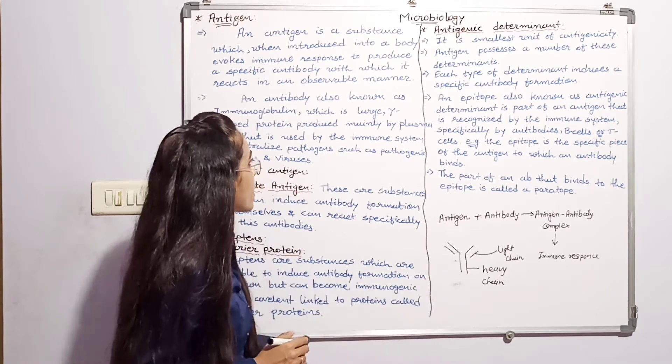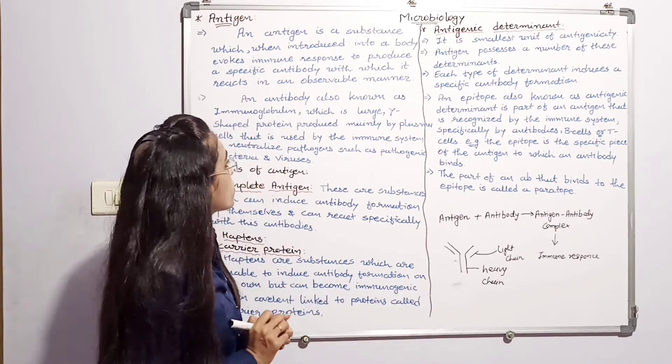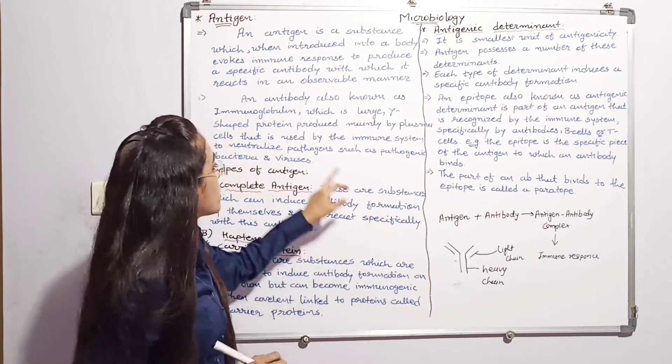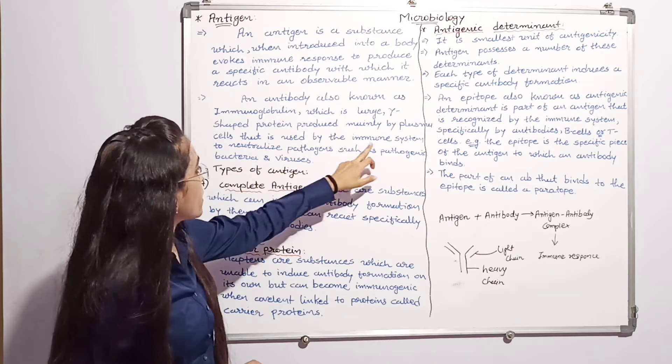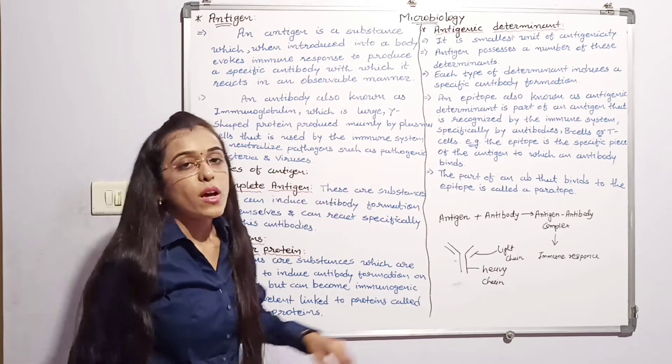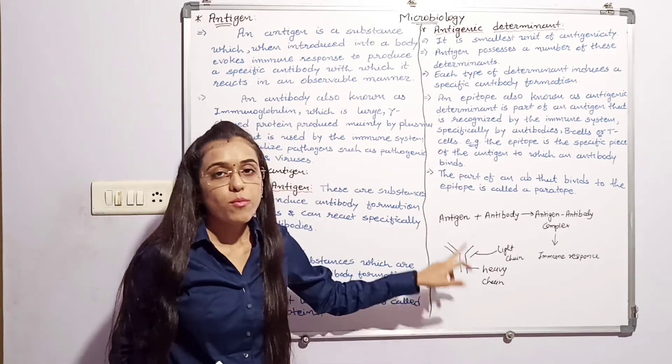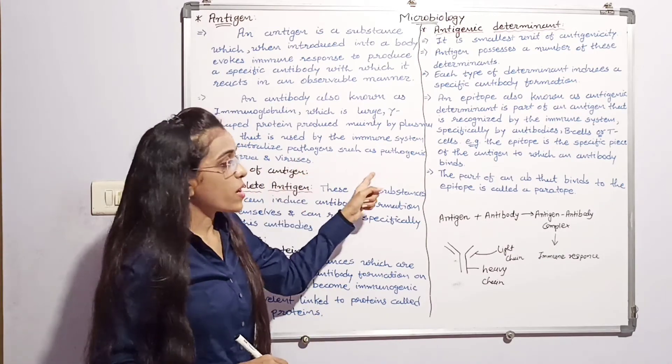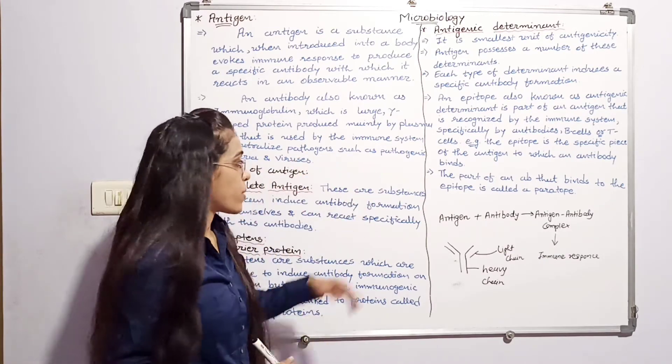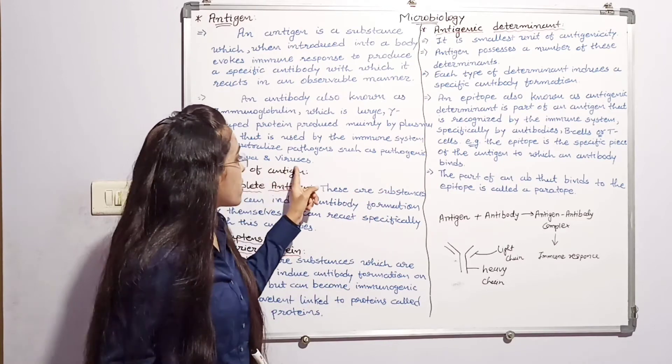Y-shaped molecule is a protein molecule. This is an immune system. Antibody is produced by plasma cell. This is a pathogen. What is pathogen? There is bacteria, a virus.